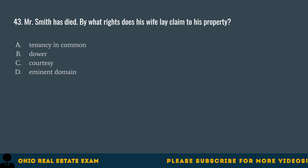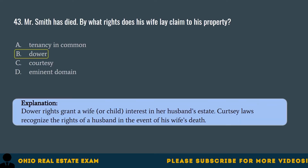Question 43. Mr. Smith has died. By what rights does his wife lay claim to his property? A. Tenancy in common. B. Dower. C. Courtesy. D. Eminent domain. The correct answer is B. Dower. Dower rights grant a wife or child interest in her husband's estate. Courtesy laws recognize the rights of a husband in the event of his wife's death.